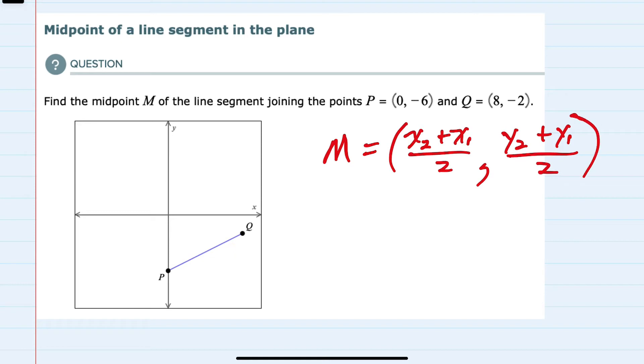To substitute into this, we can use either P or Q as our first or second values. Since it doesn't matter, I'll call P my X1, Y1, and Q my X2, Y2.